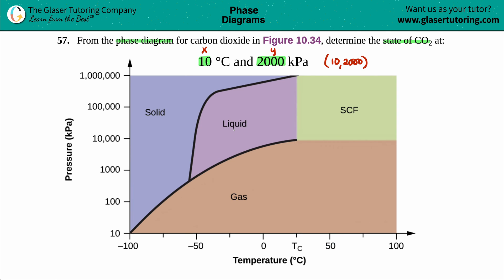It doesn't matter whether you go up the y or over the x first. I'll start with the x value. We're looking for 10. I can see 0 to 50 on the axis, and the midpoint between those would be 25. Halfway between 0 and 25 is 12.5, so 10 is a little bit less than halfway between 0 and 25.